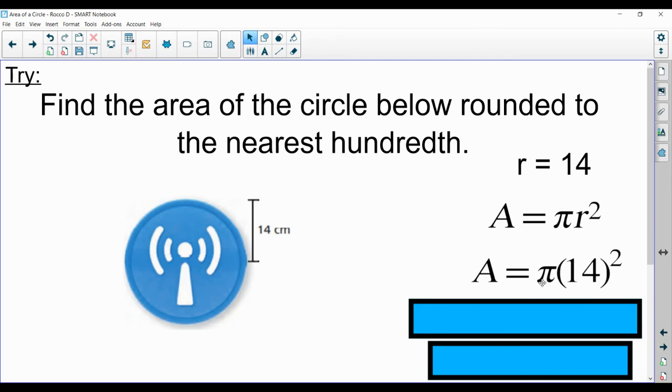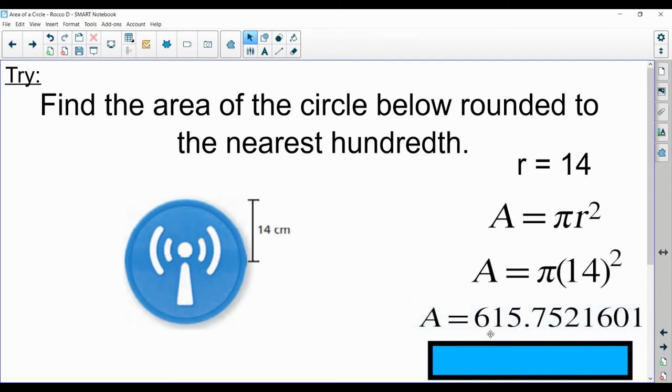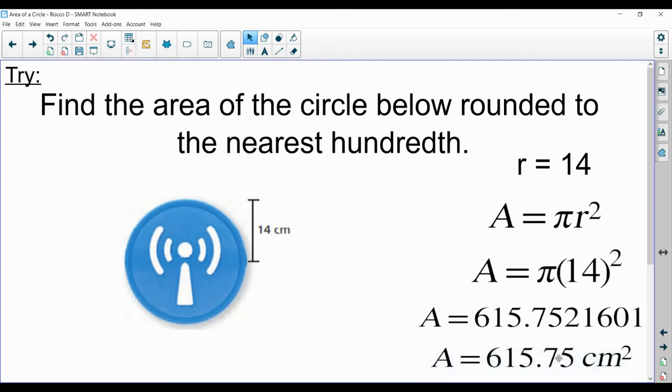Sometimes, calculators know pi notation, which means you don't have to put the 14 in parenthesis. You can just type pi 14 and squared, and you'll get your answer, 615.7521601. And we can round it off to the nearest hundredth. Remember, hundredth is the two places after the decimal. And we go next door to see if that's 5 or more. And no, it is not. So we'll let all this stuff go and leave that at 615.75 centimeters squared. There it is, rounded off to the nearest hundredth.